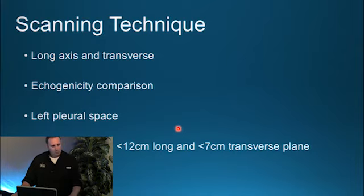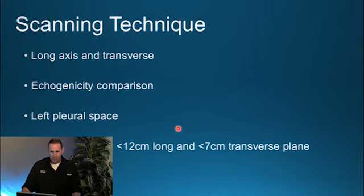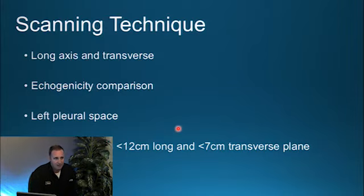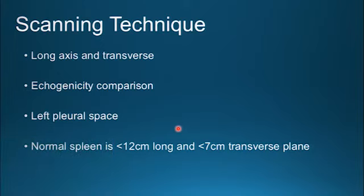For scanning technique, according to AIUM guidelines, you're going to take representative long axis views — sagittal, coronal, and transverse — with measurements. Include images of the splenic hilum. Compare the echogenicity between the left renal cortex and the splenic hilum, and evaluate the left pleural space to make sure there isn't any left pleural effusion. You may also interrogate with Doppler to find the direction of flow. The normal spleen is generally no greater than 12 cm in the long axis and 7 cm in the transverse axis.